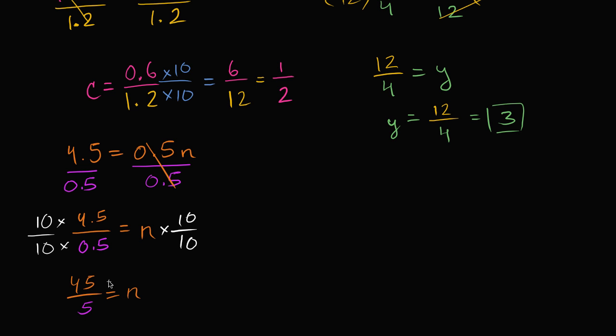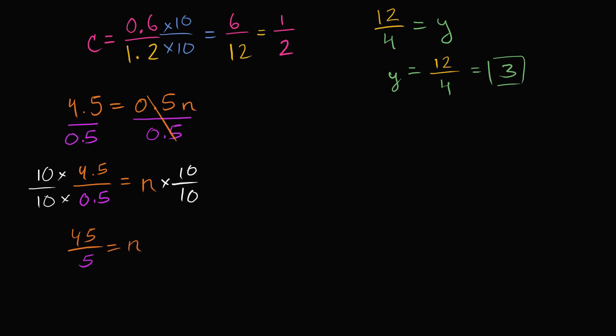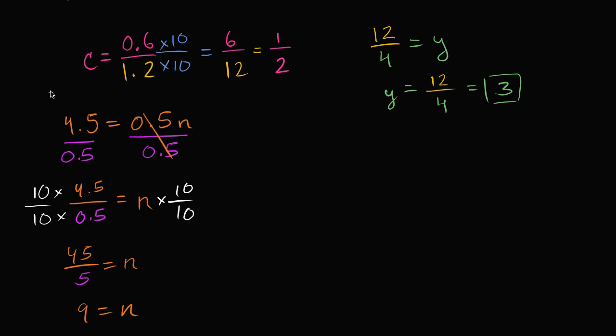But anyway, you have n is equal to 45 over 5. Well, what's 45 over 5? That's going to be 9. So we have 9 is equal to n, or we could say n is equal to 9. And you could check that. 4.5 is equal to 0.5 times 9. Yep, half of 9 is 4.5. Let's do one more, because once again I can't stop.